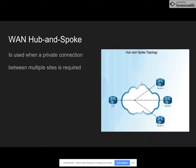WAN hub and spoke is basically used when a private connection for multiple sites is required. It's similar to point-to-point, but it requires a server which does multiple point-to-point connections, which can be expensive. It could otherwise be known as hub or spoke.